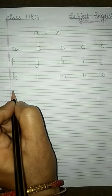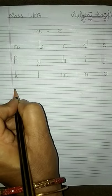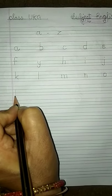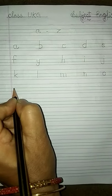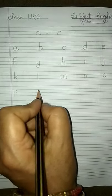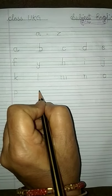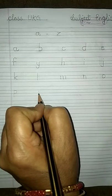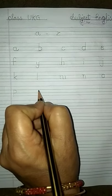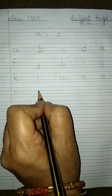P — one standing line from the first blue line to the last red line, and one small curve to the left: P. Q — one standing line from the first blue line to the last red line and one small curve to the right: Q.